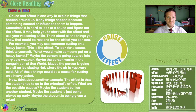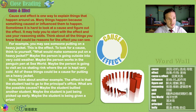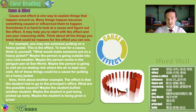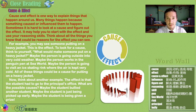Cause and effect is one way to explain things that happen around us. Many things happen because something caused or influenced them to happen. Sometimes it is hard to look at a cause and figure out the effect — it may help to start with the effect and use your reasoning skills to work backwards. Think about all the things you know that could be reasons for the effects you can see.